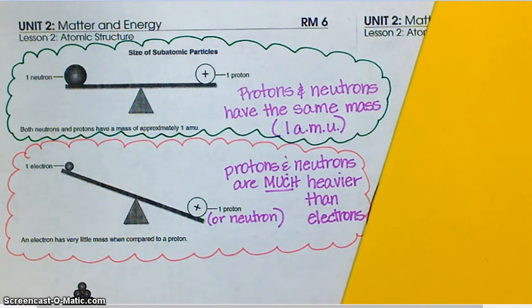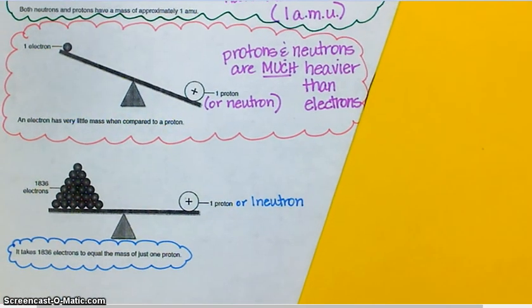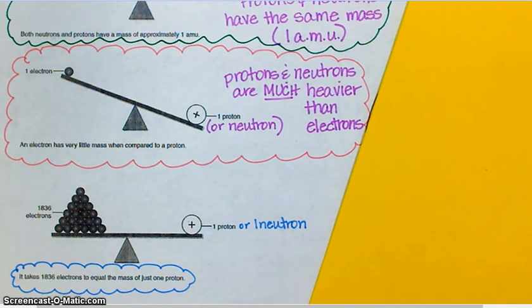Okay. We're going to move it down. And we're going to look at the third illustration. So, the third illustration has the seesaw nice and even again. But in order to make it even, we had to stack 1,836 electrons on one side to balance out the mass of a proton or one neutron. Because a proton and a neutron have basically the same mass. So, it takes 1,836 electrons to equal the mass of just one proton. Everybody got that?